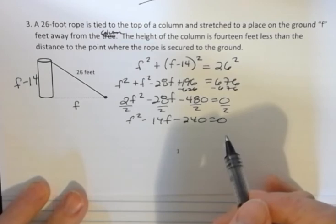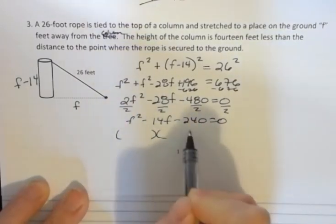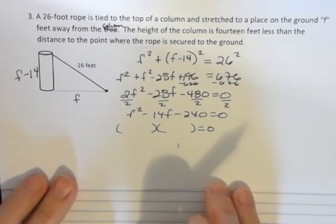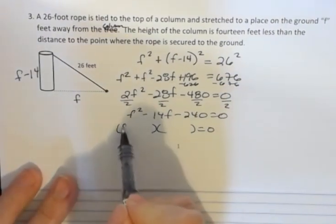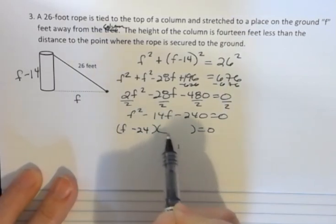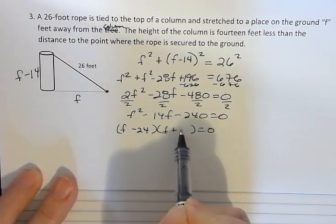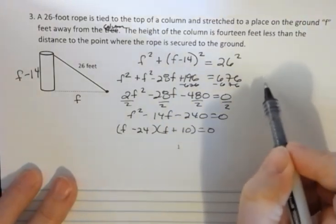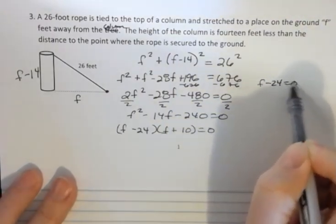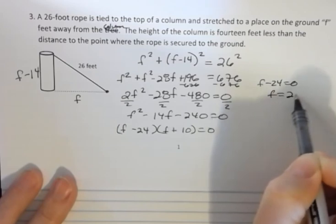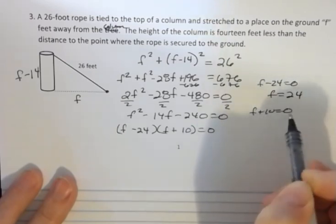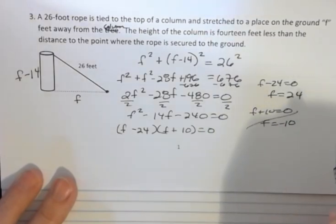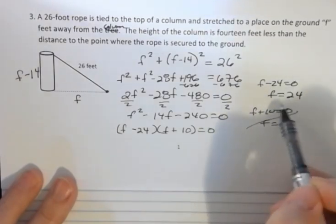And I'm going to have to find two numbers that multiply to 240 but add up to negative 14. And that's going to be a minus 24 and a positive 10. And when I set those two things equal to 0, f minus 24 equals 0 or f is 24, and f plus 10 equals 0 or f is negative 10. Again we can't use the negative value. So f is 24.